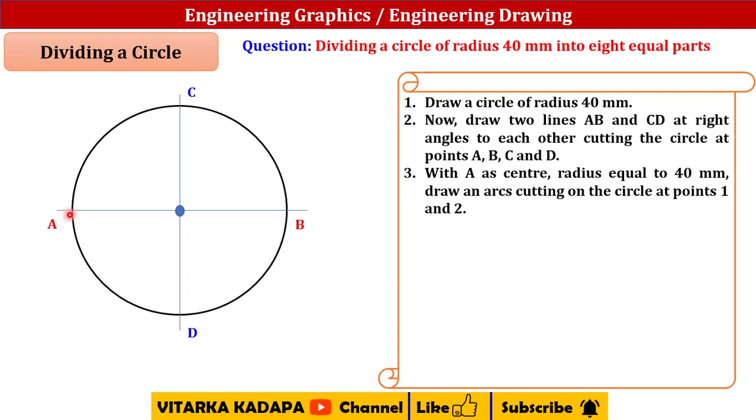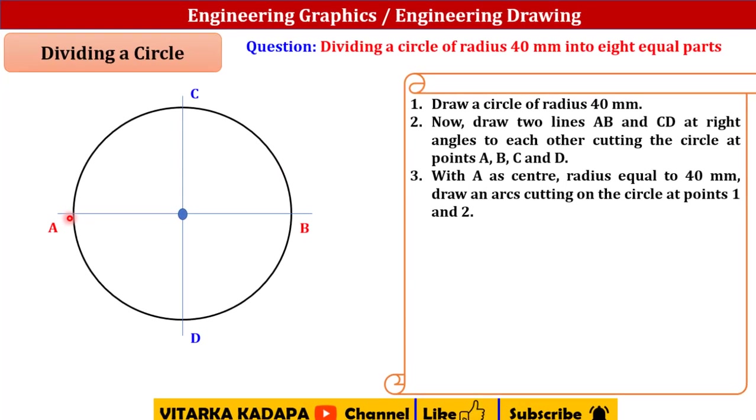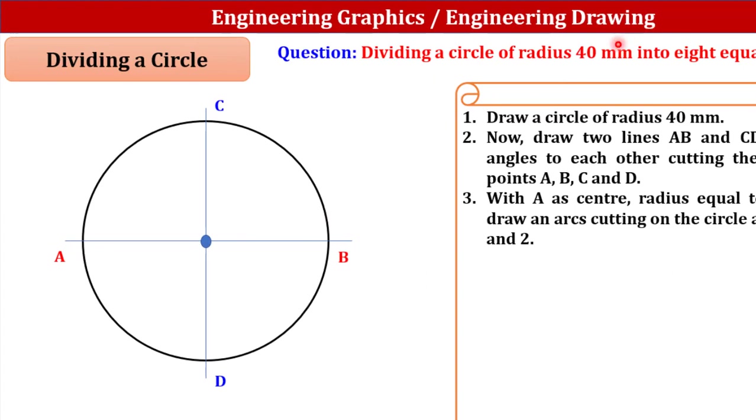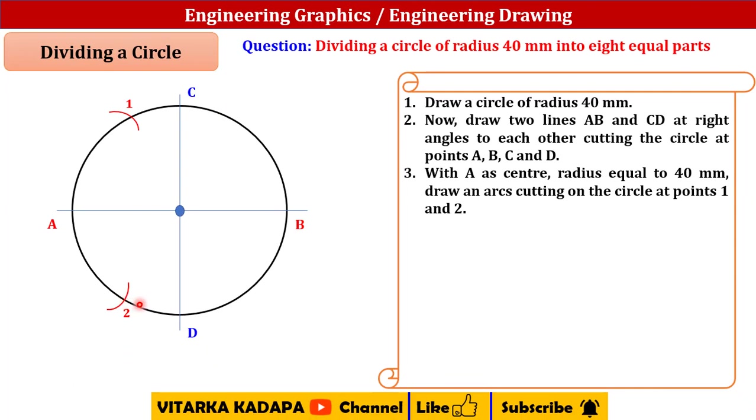With A as a center and radius equal to 40 mm, which they have mentioned in the question, draw the arcs cutting on this particular circle. With this particular center I will cut an arc here and name this point as 1. Similarly at the bottom side also I will draw one more arc and name it as 2.